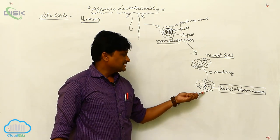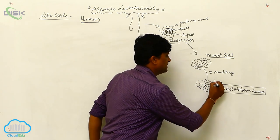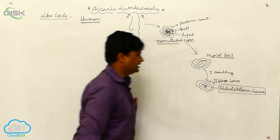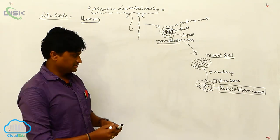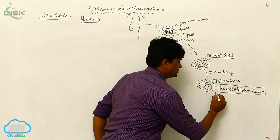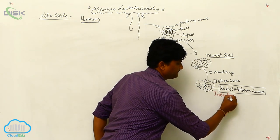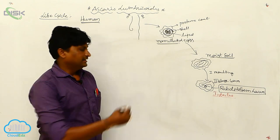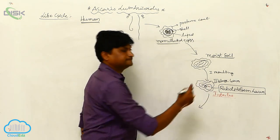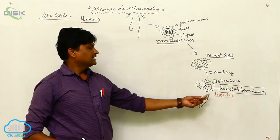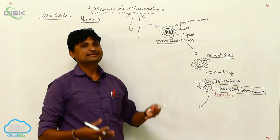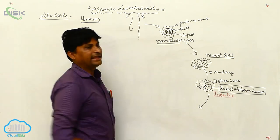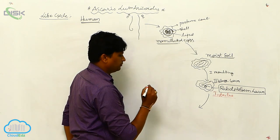The second stage larva is called the rhabditiform larva, which is very important as it is the infective stage to human beings. This rhabditiform larva is released into the outer environment and contaminates food materials or water, through which it reaches human beings again.